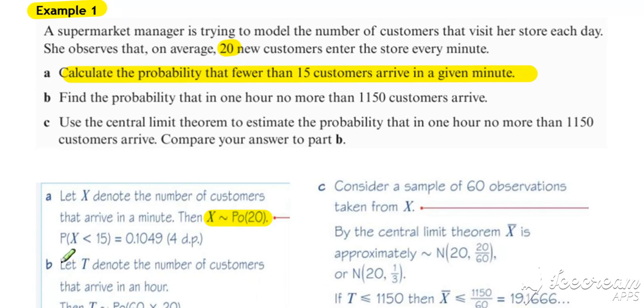So that's just a normal Poisson question. Get your probability less than 15 off your calculator. So normal Poisson for part A, and then we go on to part B.